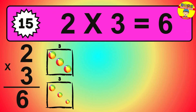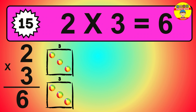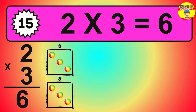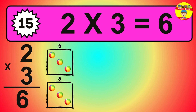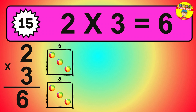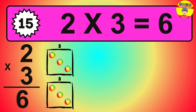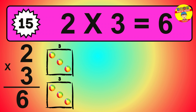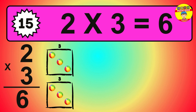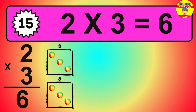Question 15. 2 times 3 equals what? The answer is 2 times 3 is 6. To calculate, we have 2 groups with 3 balls each one. So how many balls do we have? 6 balls.